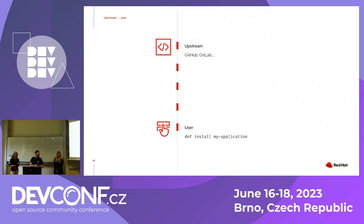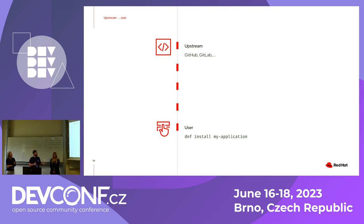So how does it work? As a user of my favorite Linux distribution, I don't care about the stuff in between. There is an upstream — someone develops a project, does some releases — and as a user, what I want to do is run DNF install or upgrade, get the latest version or get the application in the first place. I don't care about anything in between. But someone needs to do that, so what happens in between?